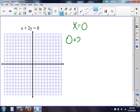So I get 0 plus 2y equals 8. So now I have 2y equals 8. To get rid of that 2, I'm going to divide both sides by 2. Therefore, y equals 4.